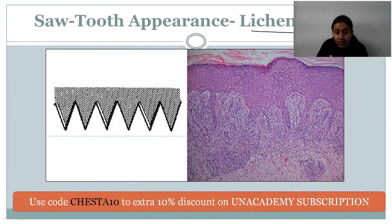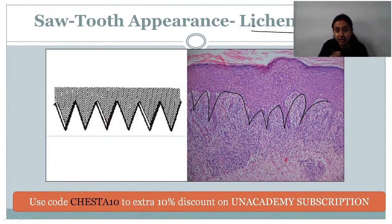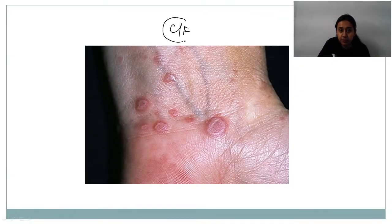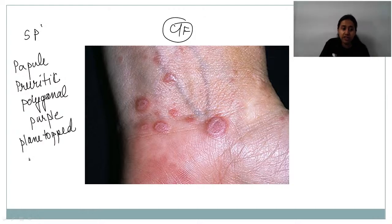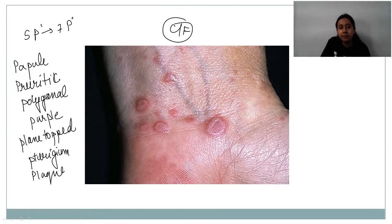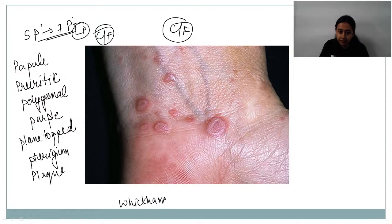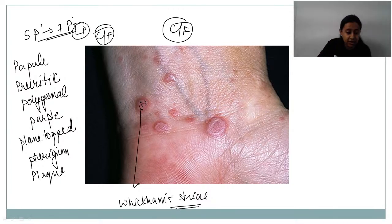The sawtooth appearance is seen in lichen planus, where the rete ridges look like the teeth of a saw. Clinically, lichen planus presents with the five P's: papules that are pruritic, polygonal, purple, and plain-topped. Additionally, pterygium and plaque formation are described, giving up to seven P's. Wickham striae — a white lacy appearance — is also seen in the clinical lesions of lichen planus.